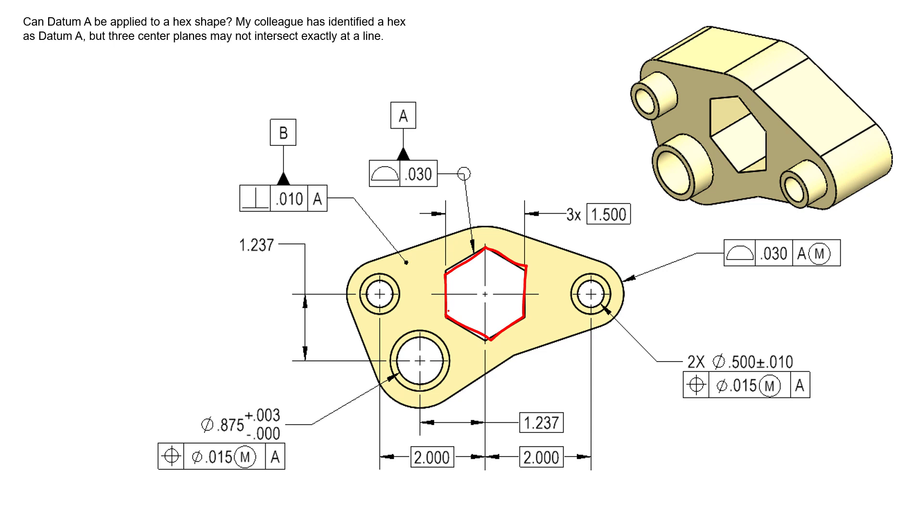And so to answer the question quickly: yes, you can identify the primary datum as a hexagon shape, and that will control five degrees of freedom for anything that references that datum feature as a primary datum feature in the feature control frame. Now the question that gets brought up is: